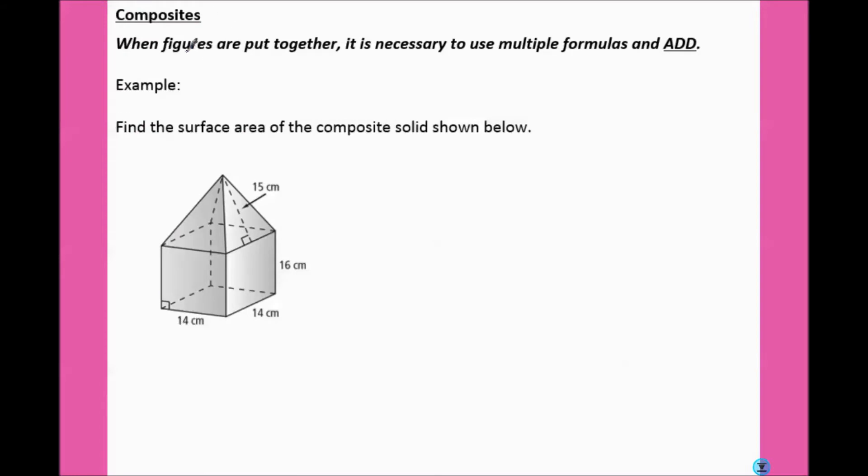Composite means that we are going to put together multiple figures, so we're going to need to add pieces together at the end. In our example, find the surface area of the composite solid below. We've got a square pyramid on top of a rectangular prism.